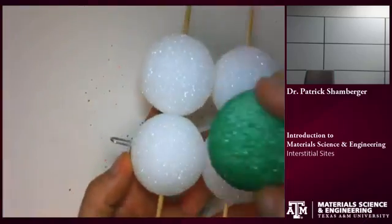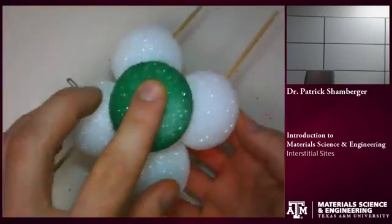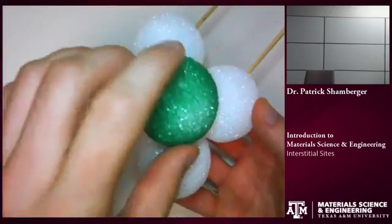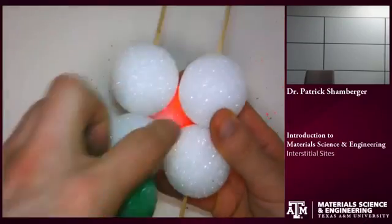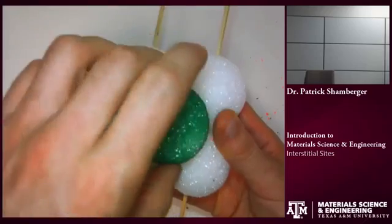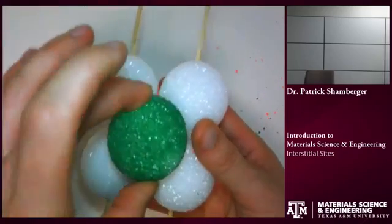Next we have octahedrons. This has four atoms around the equator, so four on this plane. An atom above and an atom below. If I remove this top one, you can see where that octahedral site would be located. It is this volume right in the middle of the octahedron.